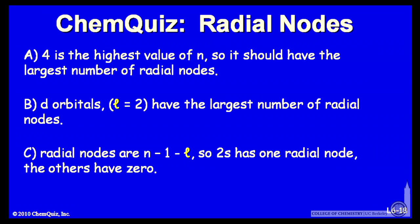Or C, radial nodes are n minus 1 minus l, so 2s has one radial node, while the others have none. Think about those possible explanations and make another selection.